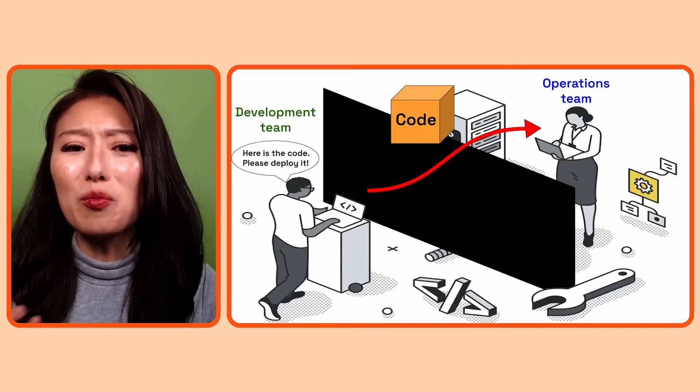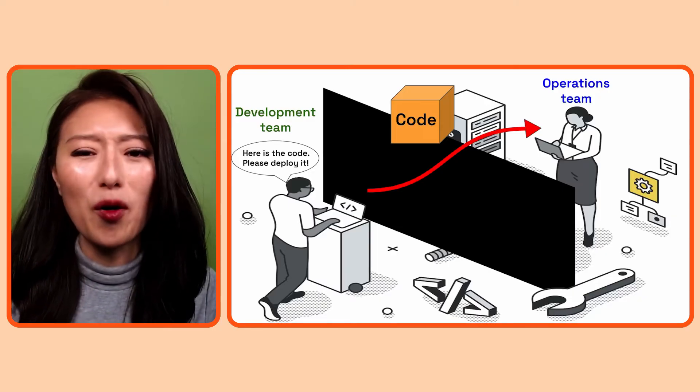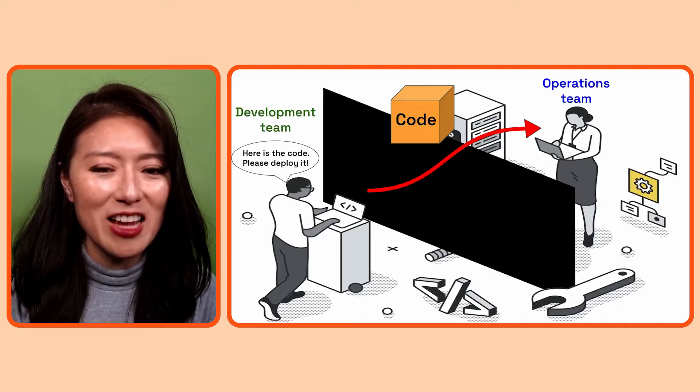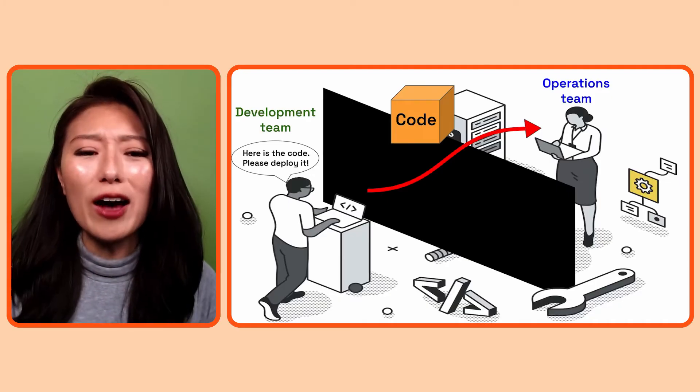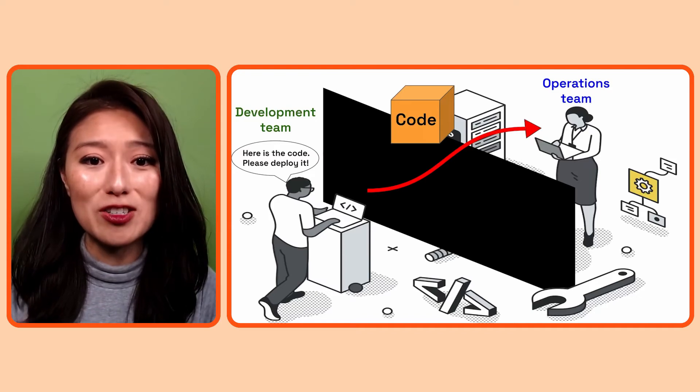When you put multiple teams together with a partial understanding of the process and you incentivize them to achieve conflicting goals, a lot of tension and miscommunications are bound to happen. When something goes awry, it could easily lead to blame shifting because it's hard to understand where the problem is coming from and who is responsible for fixing that problem. The lack of collaboration and the distress that came from that caused a lot of friction and delays in the delivery process.